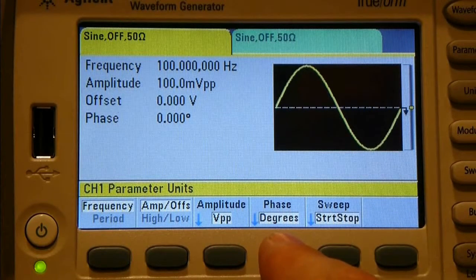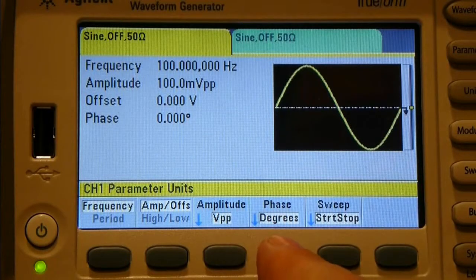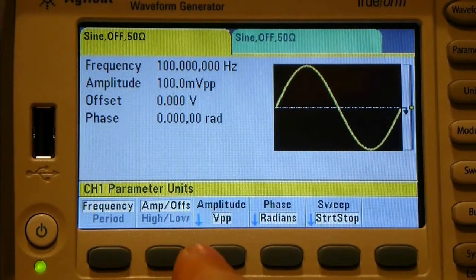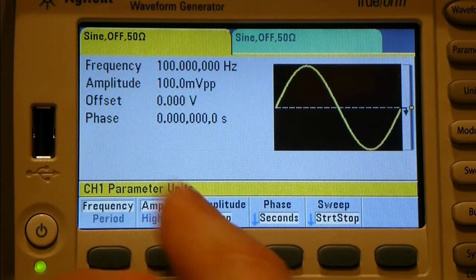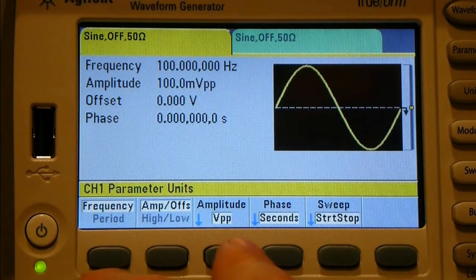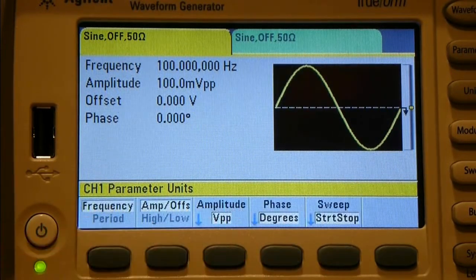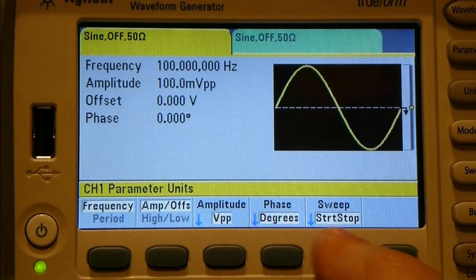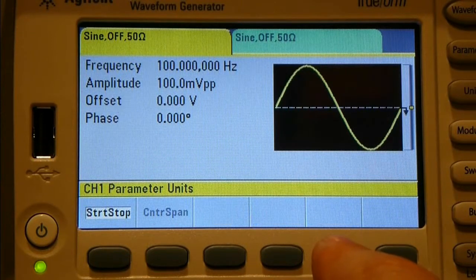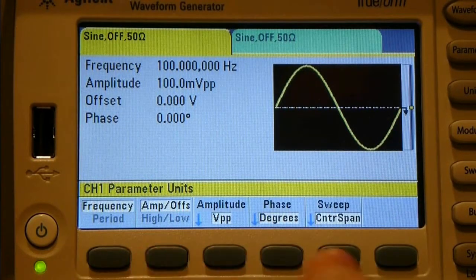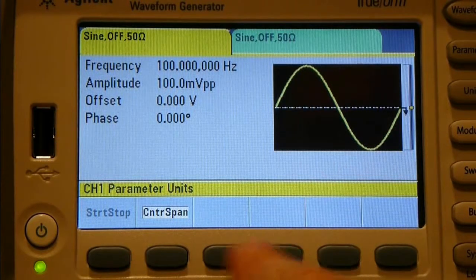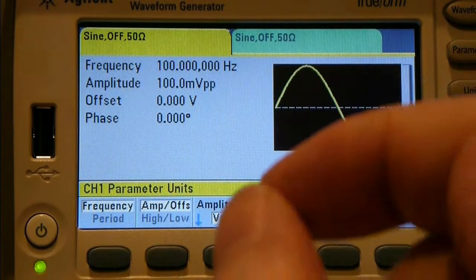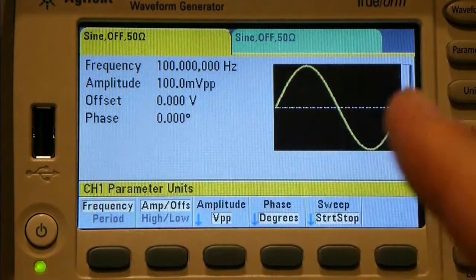Phase, which is where you can offset one channel from another. You can use degrees, which is the default. You can switch to radians, or you can switch to seconds. Sweep is start and stop, and center span. So if you're using the sweep input, it allows you to determine whether you're expanding from the center or whether you're sweeping from one end to another.